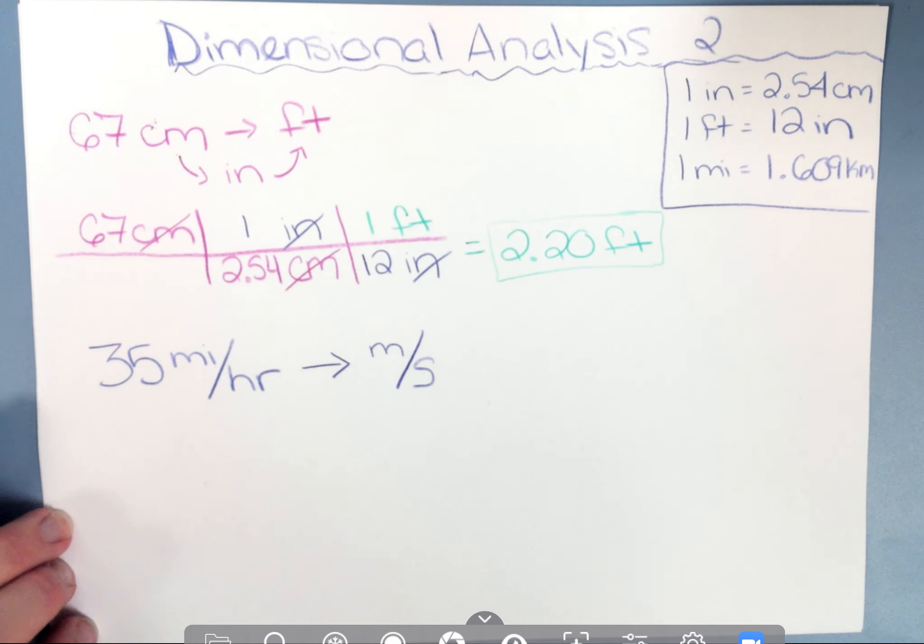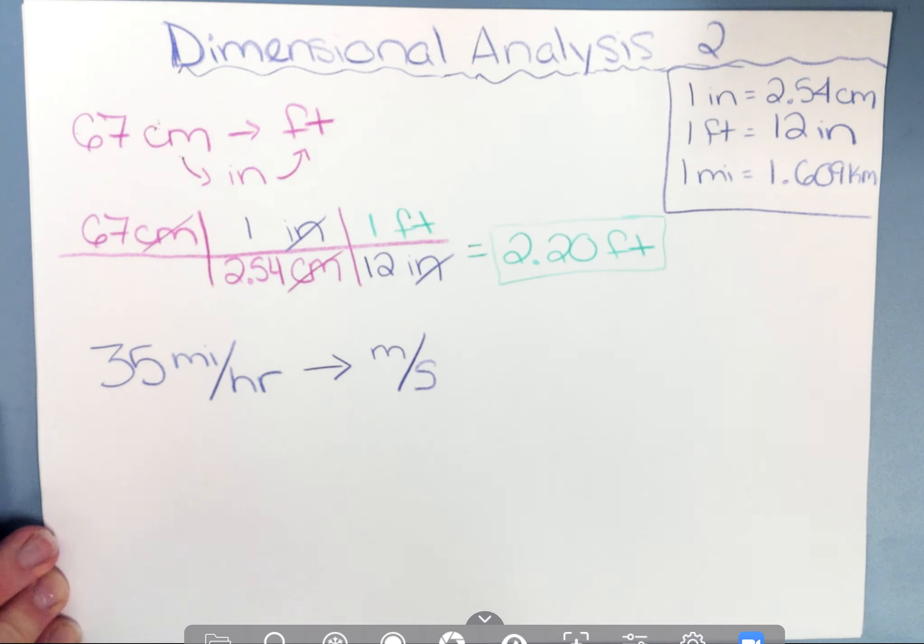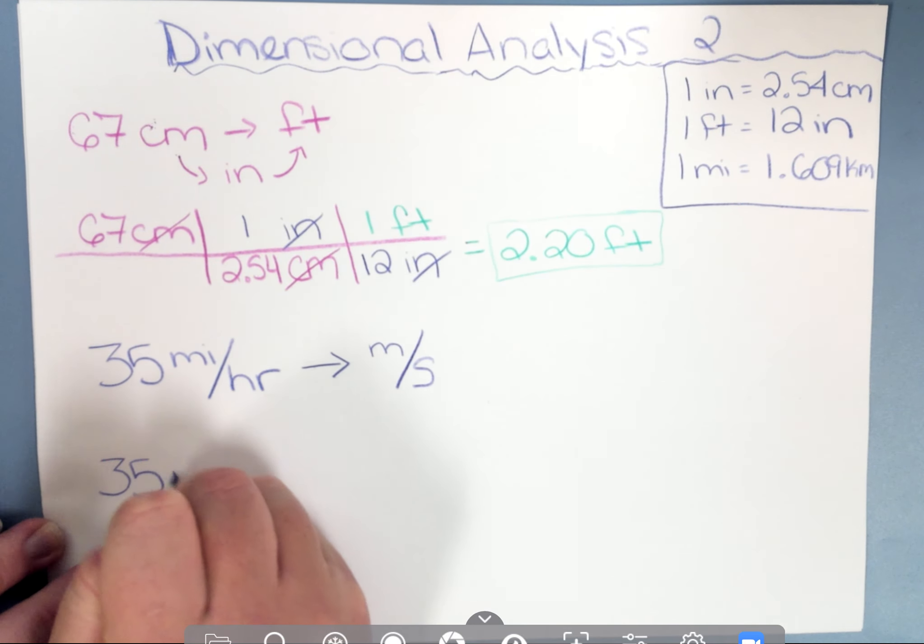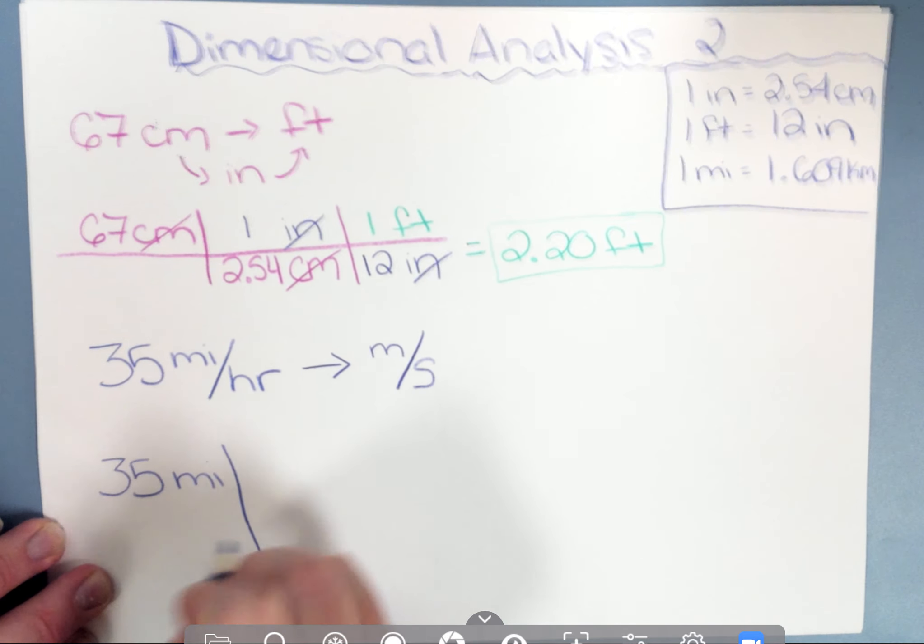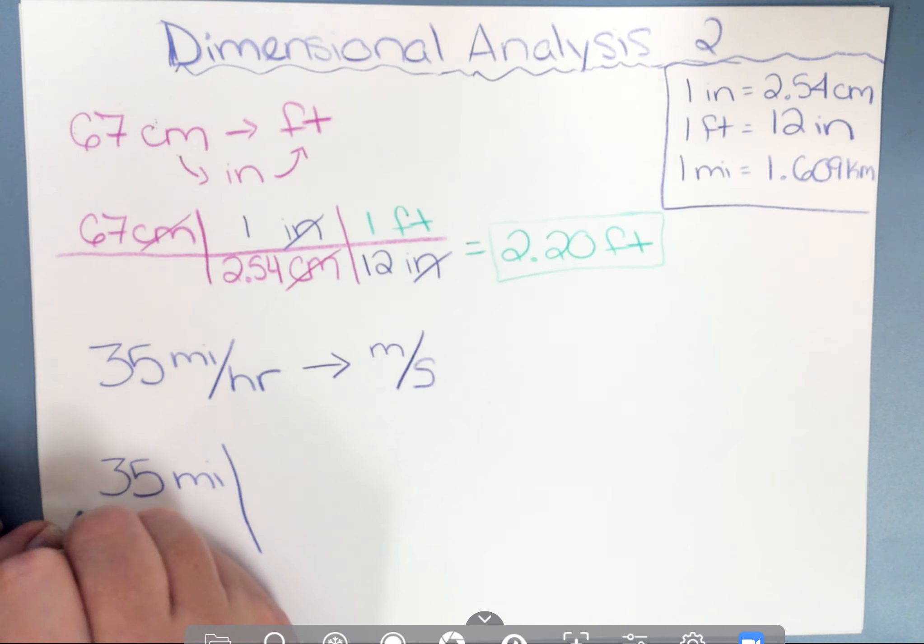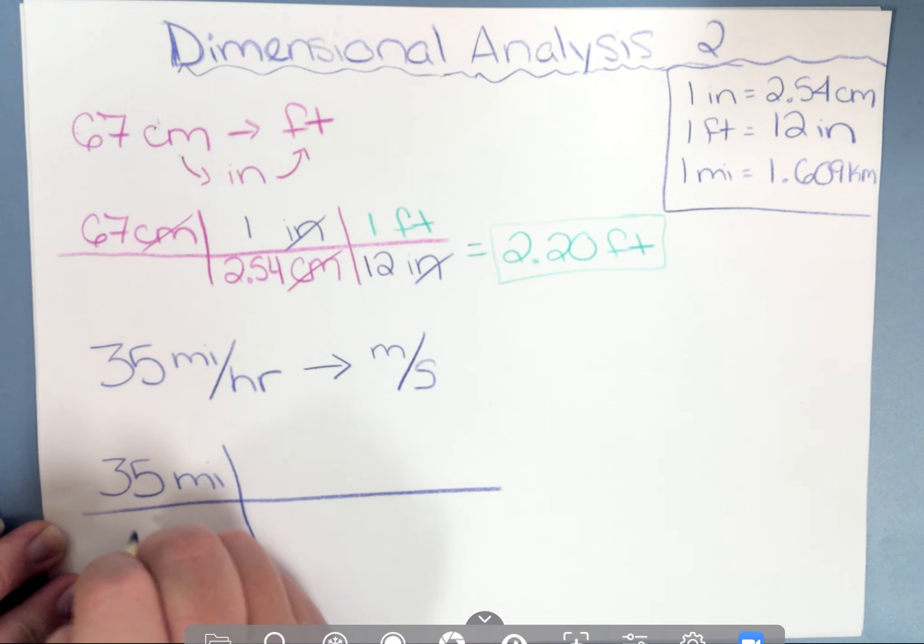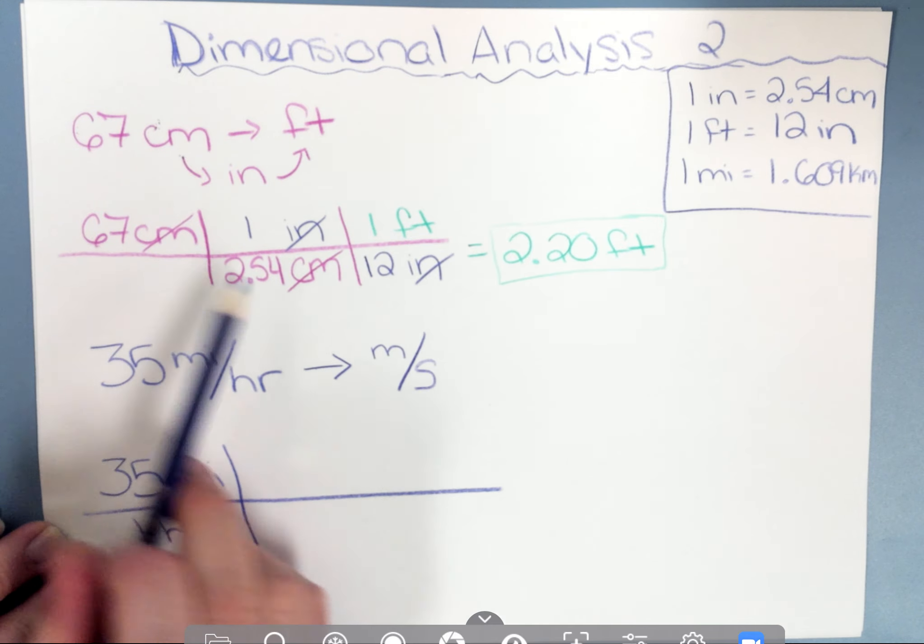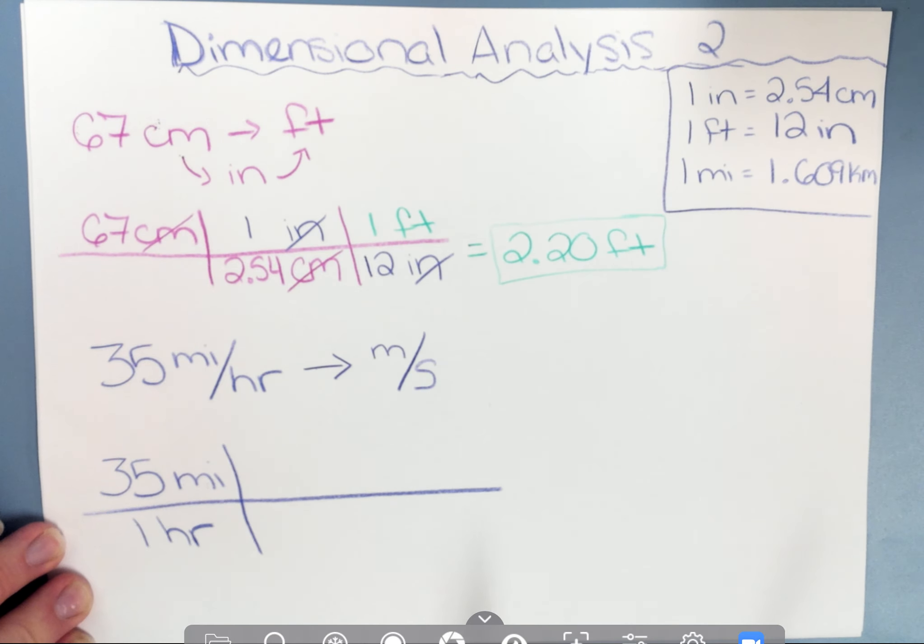We're going to have quite a few steps in this problem, which is why we're going to do this one out together. So if I started with 35 miles, this per hour really means I'm going to put the 35 miles over 1 hour. We've been leaving this box blank, but when it's a something per something type of unit, which is what we call a derived unit, we're going to put one on top of the other.